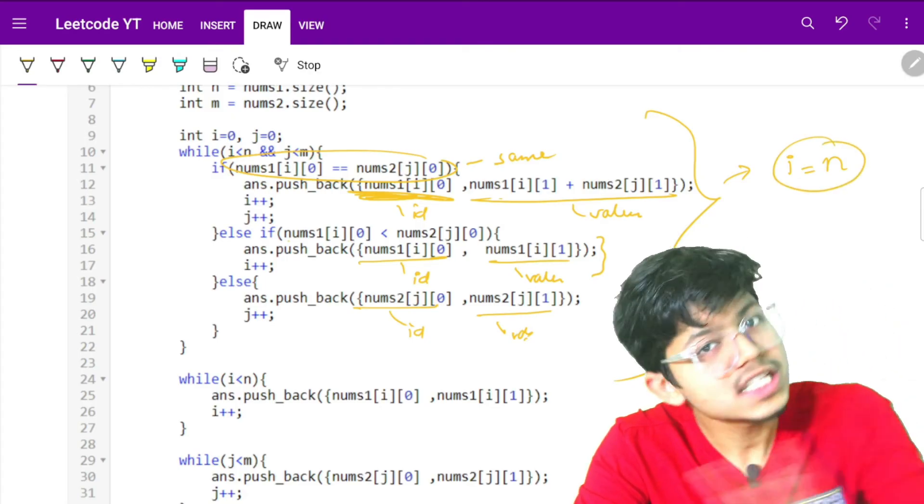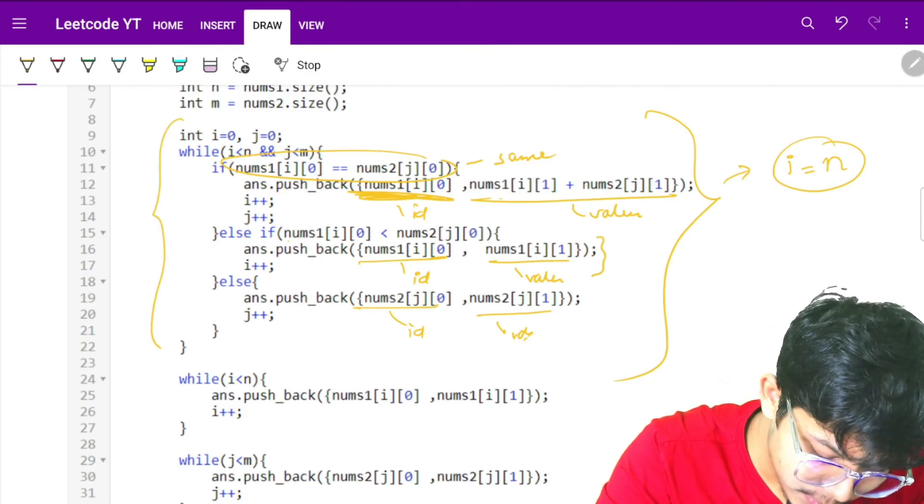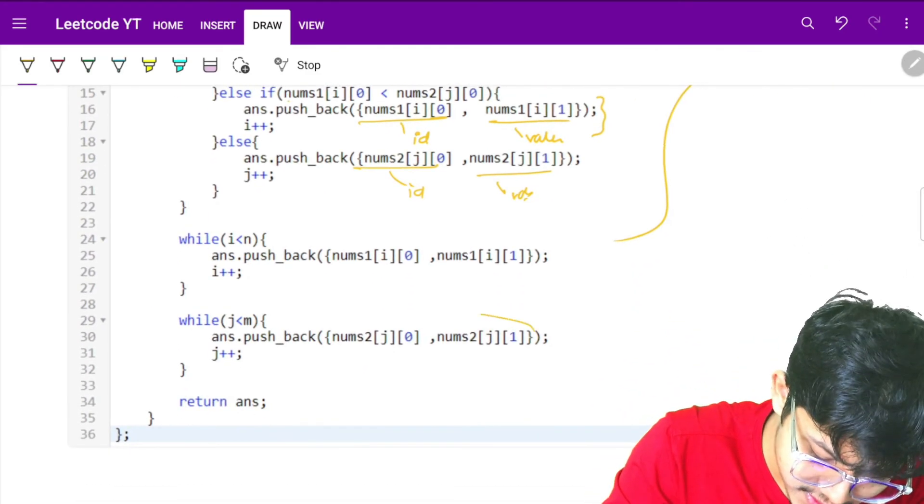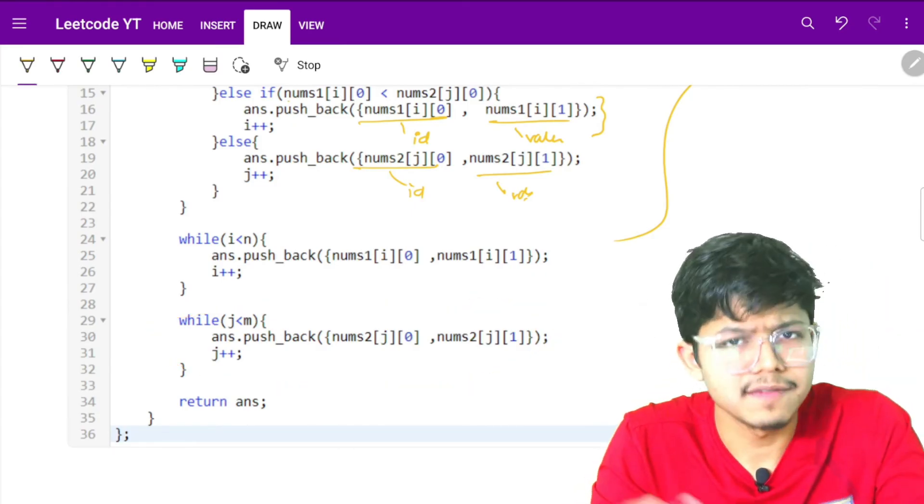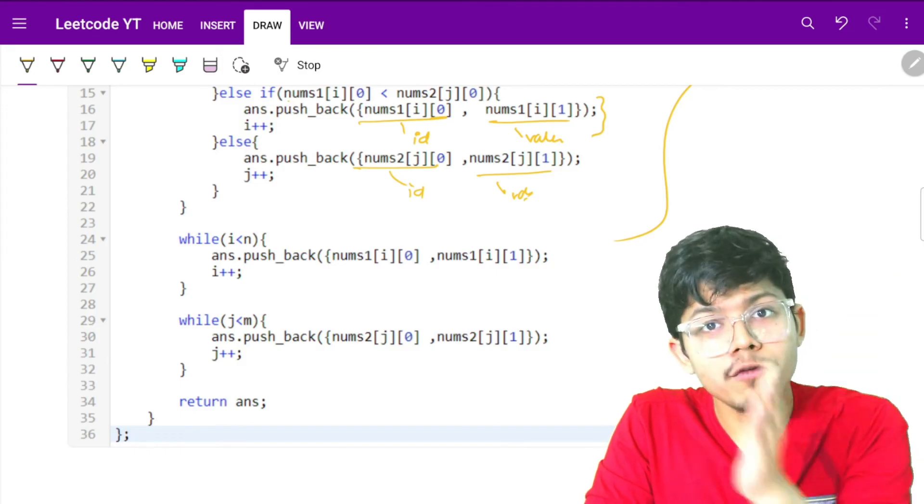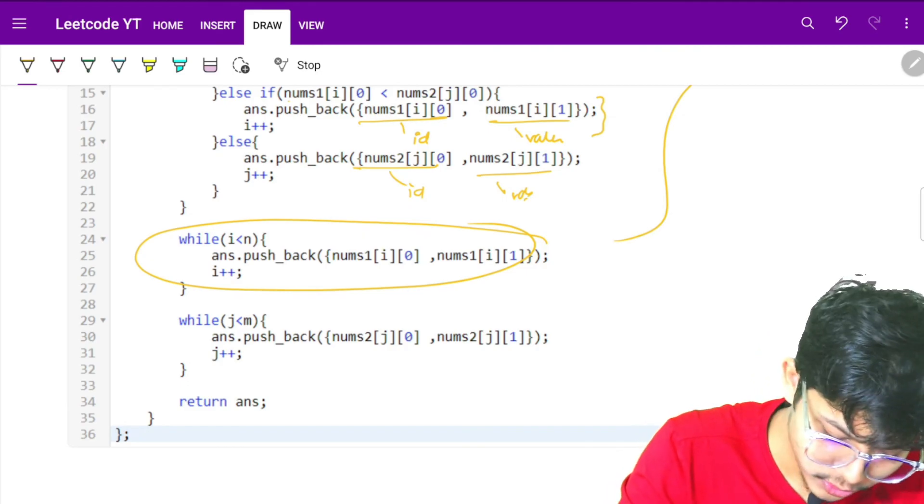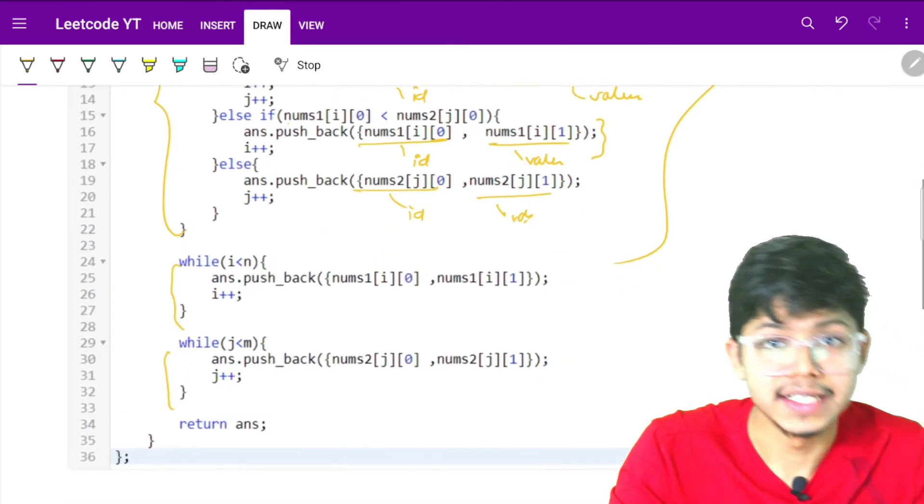Let's say my i reached position n, meaning i is finished but j has not. This loop will break down but my j was still not completed, so I'll complete my j here. Vice versa, if j was at the end but i was not completed, I'll just complete my i here.